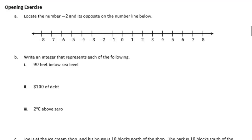Part A: locate the number negative 2 and its opposite on the number line below. So we're looking for negative 2 — there's negative 2 — and its opposite would be 2.